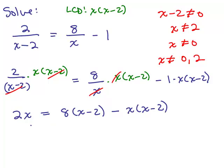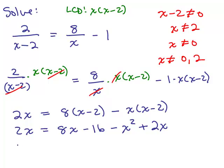Let's simplify the right-hand side. Using the distributive property, 8 times x minus 2 gives 8x minus 16. Distributing the minus x through the parenthesis gives minus x squared plus 2x. We can keep simplifying the right-hand side by combining like terms: negative x squared, 8x plus 2x is plus 10x, and minus 16.